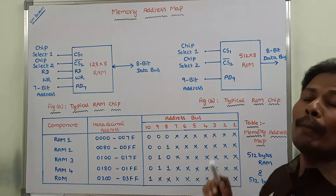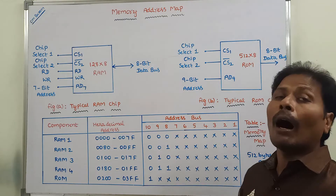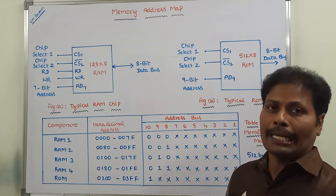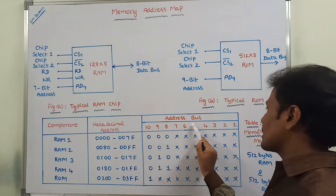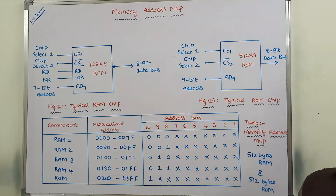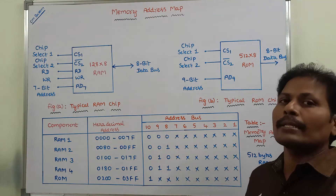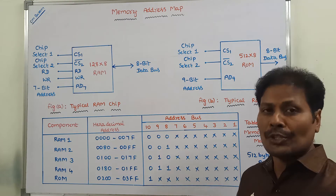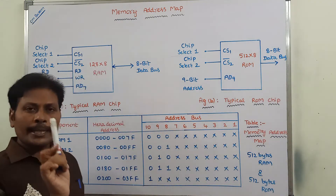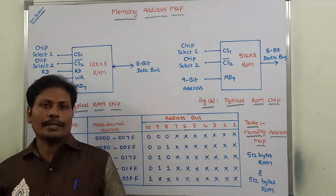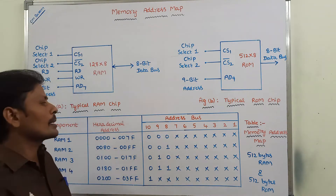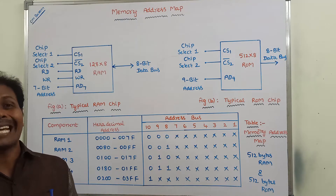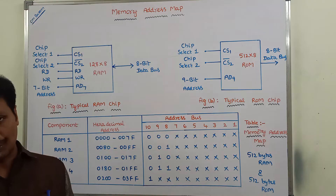The third column in the memory address map represents the address bus lines. The address bus consists of 16 lines, but we are using only the first 10 lines. The remaining 6 lines cannot be used and are treated as 0s.